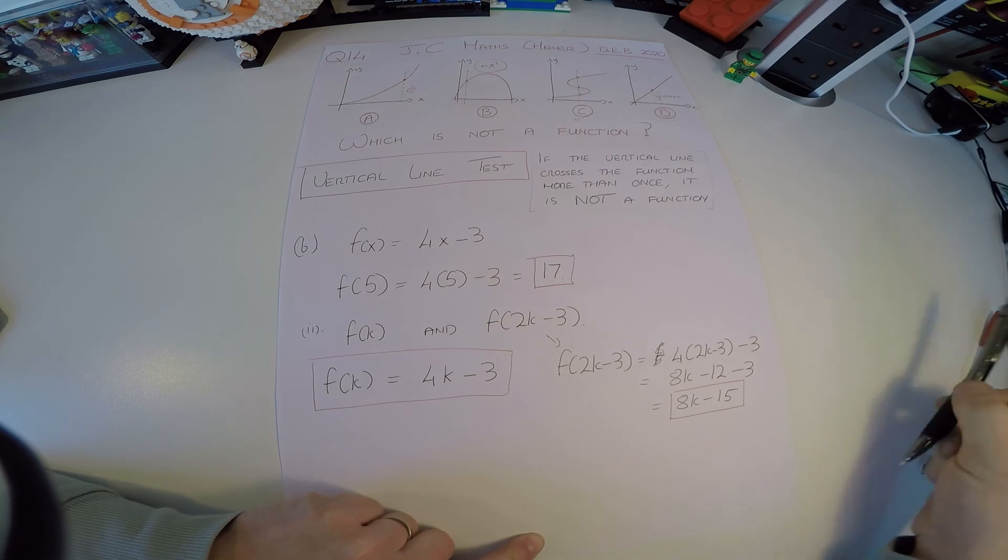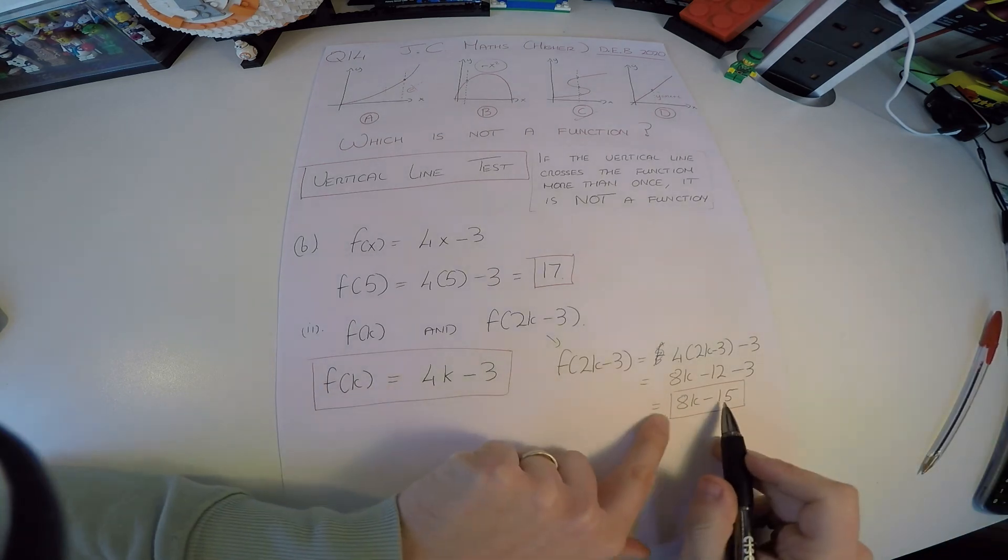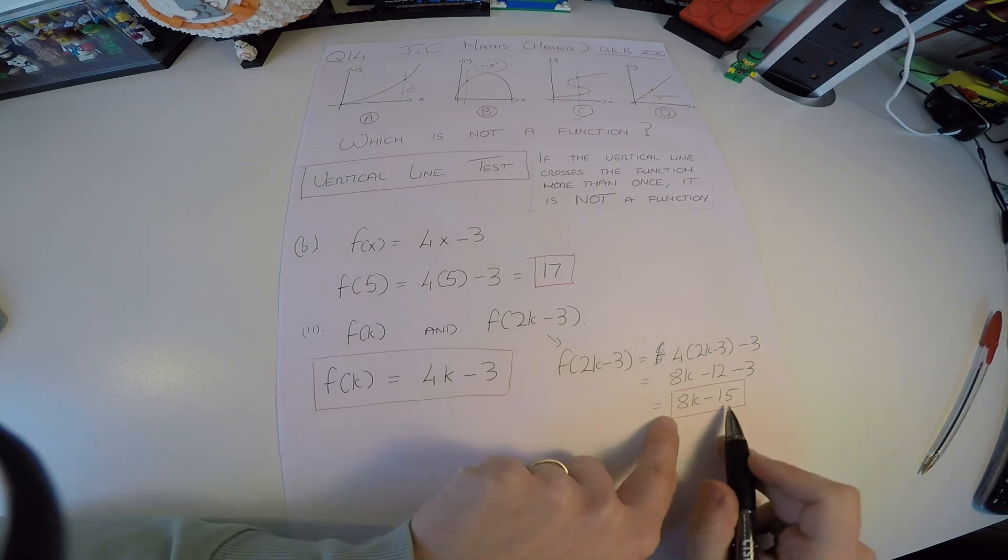Okay? So I actually have my f of k and my f of 2k to be equal to 4k minus 3 and 8k minus 15.